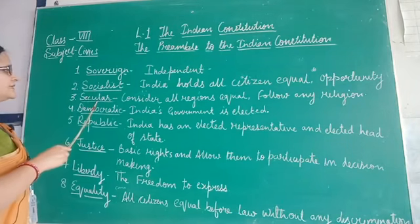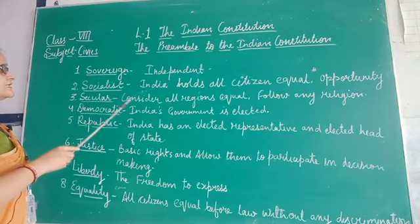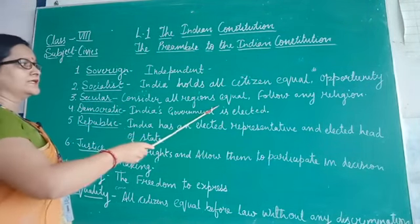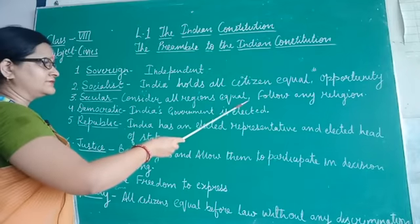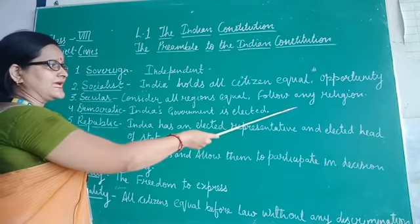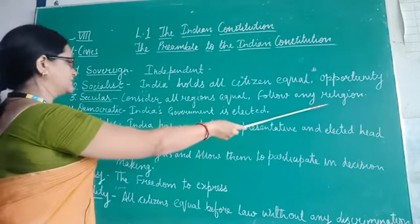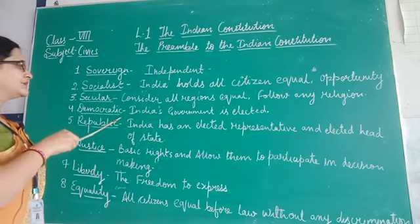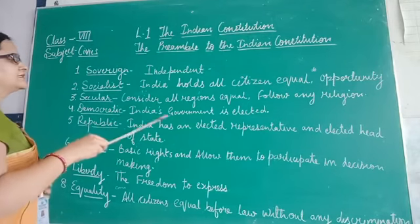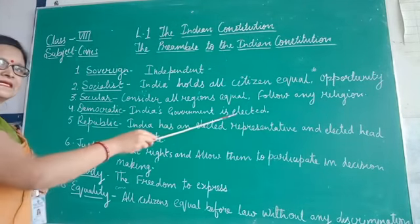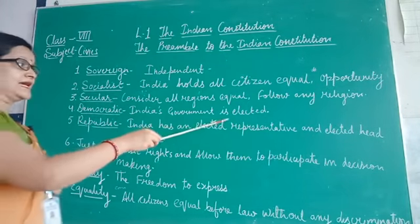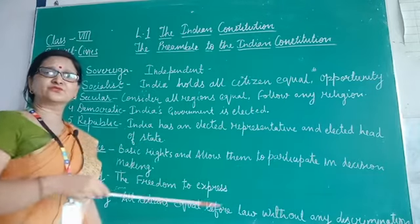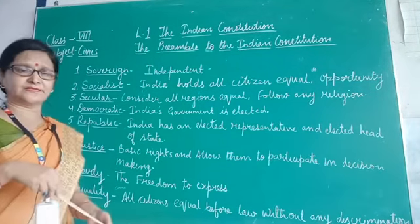Secular means that India considers all the religions equal and gives the right to citizens to follow any religion. Democratic means that India's government is elected, and the people of the country have a right to choose their government themselves.